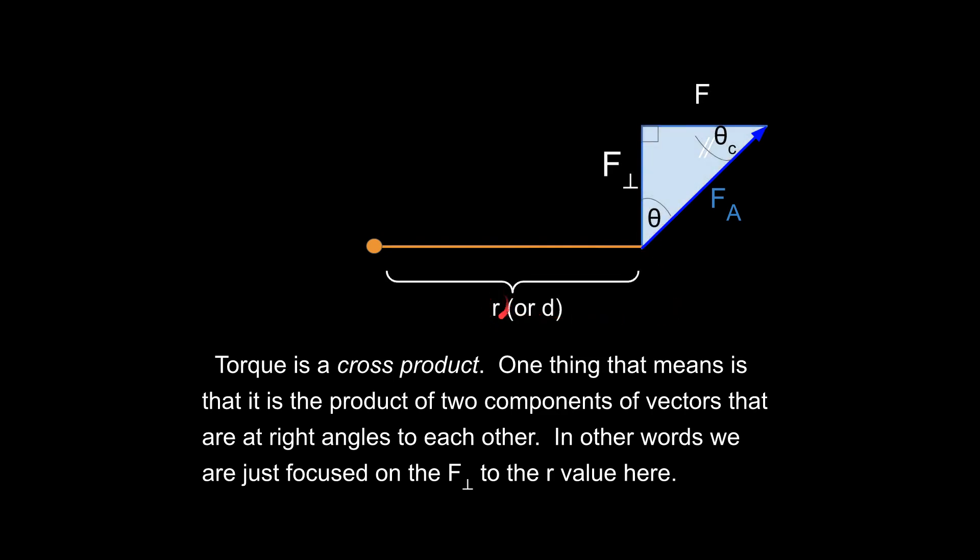This is usually written as R in an AP physics classroom. In a standard physics classroom, this is going to be written as a D most likely. But it's just the distance between the axis of rotation and where the force is applied. There are different ways to teach this, different ways to think about this. With a concept called the lever arm, I think this actually makes a lot more sense.